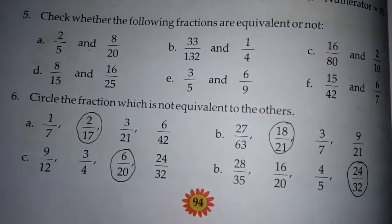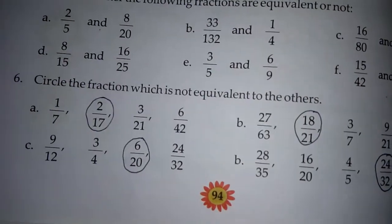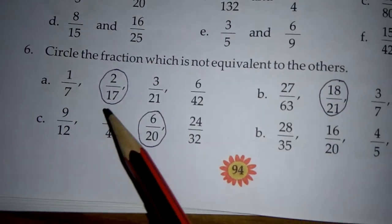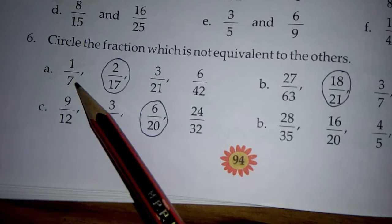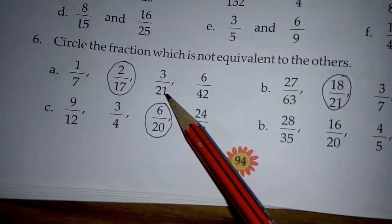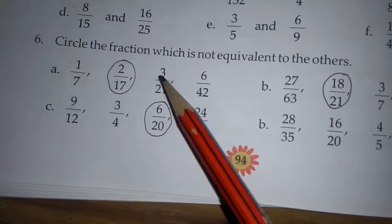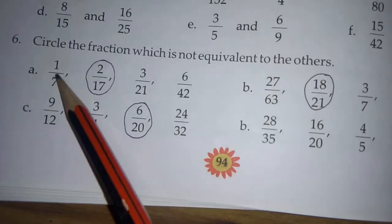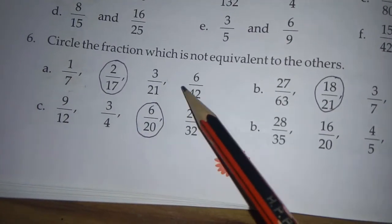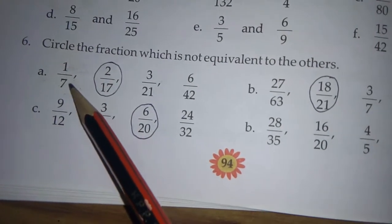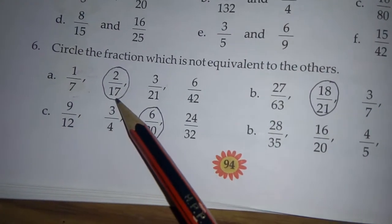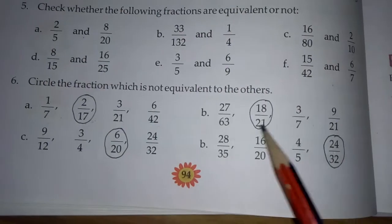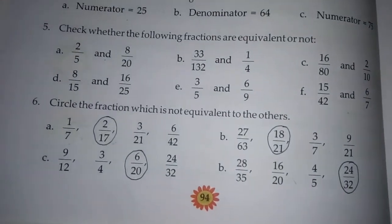Question 6: circle the fraction which is not equivalent to the others. For example 1 by 7: multiply by 3 gives 3 by 21 — equivalent. Multiply by 6 gives 6 by 42 — equivalent. But if you multiply 1 by 2 and 7 by 2, you get 2 by 14 — neeche 14 hona chahiye tha lekin yahan 17 hai. Isliye ye equivalent nahi hai aur hamne isko circle kiya. Isi tarike se aap remaining bhi find out karenge.